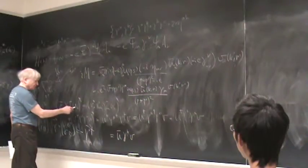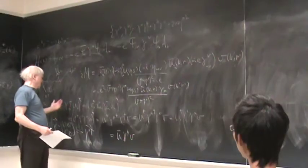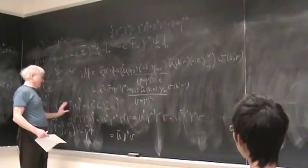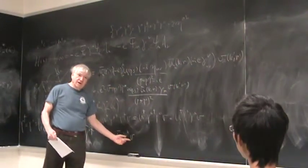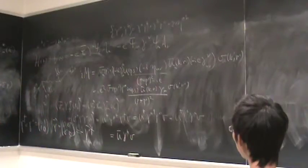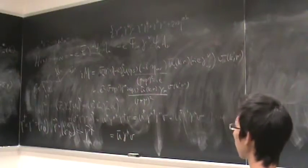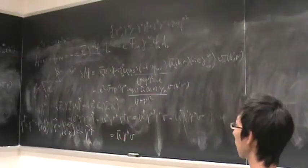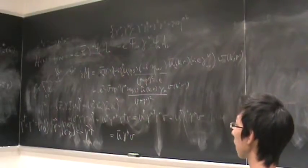So for γ⁰ where you don't get a minus sign from the dagger, you can just move the γ⁰ through. When it's γ^i you get a minus sign, but then you move the γ⁰ through and you get another minus sign. So altogether this is equal to u† γ⁰ γ^μ v, which is equal to ū γ^μ v.